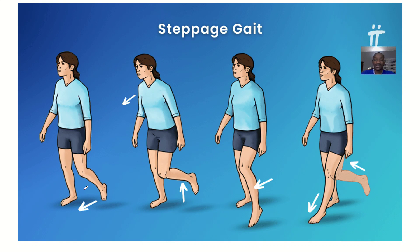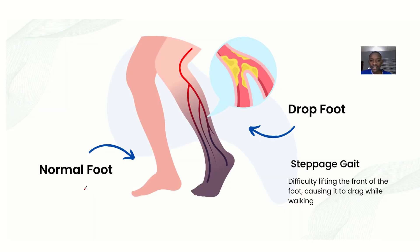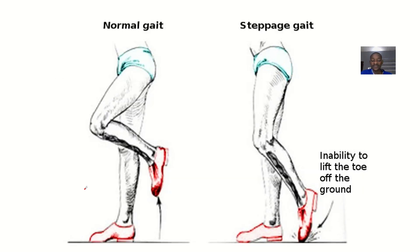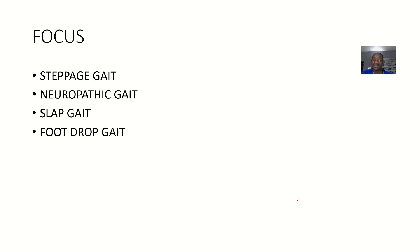If you want to remember what a Steppage gait is, just have this at the back of your mind: big stepper. Sometimes when you wear a very big shoe, for you to walk properly with it, you have to raise your leg very high before you drop it — on the street they call that a big stepper. So Steppage gait is more like: before you walk, you raise your leg high, and when you drop it, you slap it on the floor. That's why they also call it slap gait.